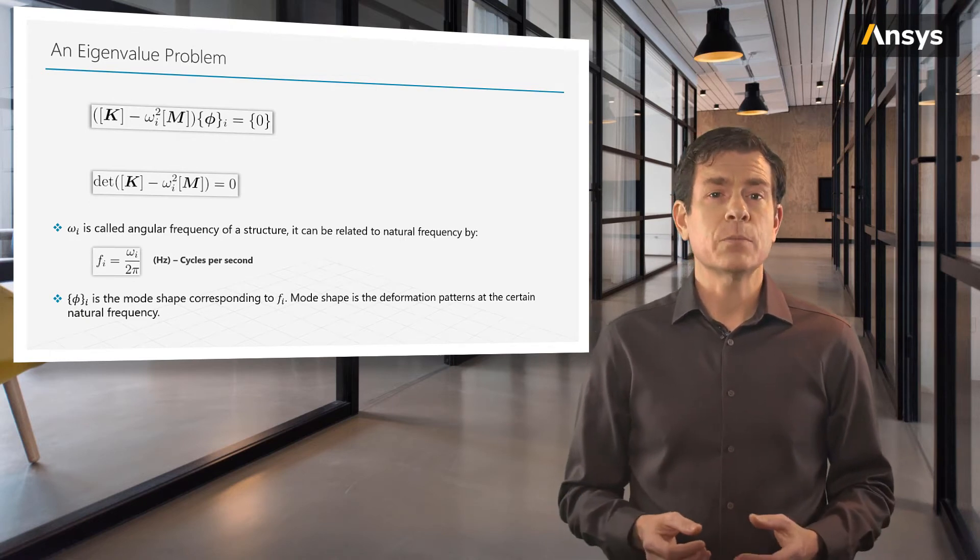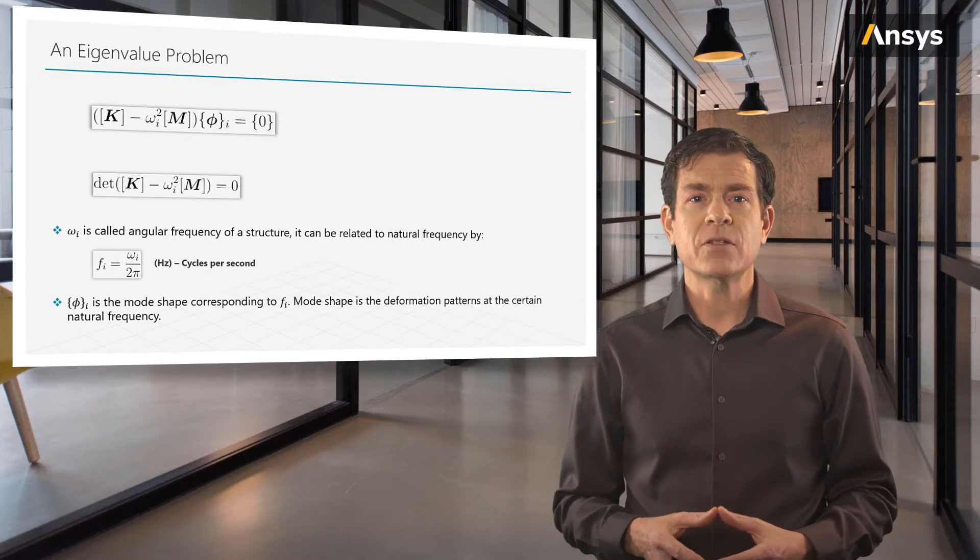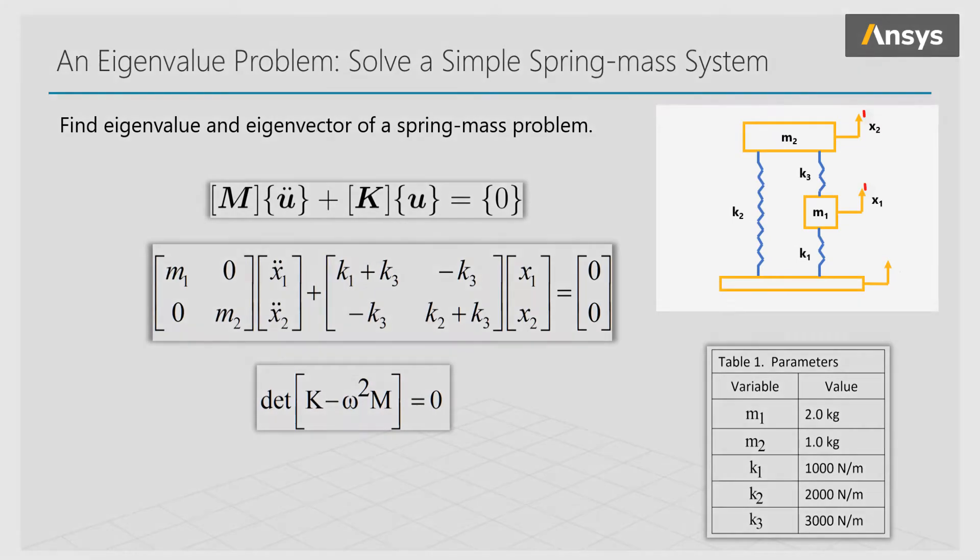Here is an example of a simple 2 degree of freedom spring mass system. There are 2 degrees of freedom as each mass can move in a single direction, x1 and x2. Our masses and spring stiffnesses are known, and we wish to determine the eigenvalues and eigenvectors of the system. We form the terms of the matrices based on performing a force balance on each mass, so F equals ma, and writing this in the matrix form.